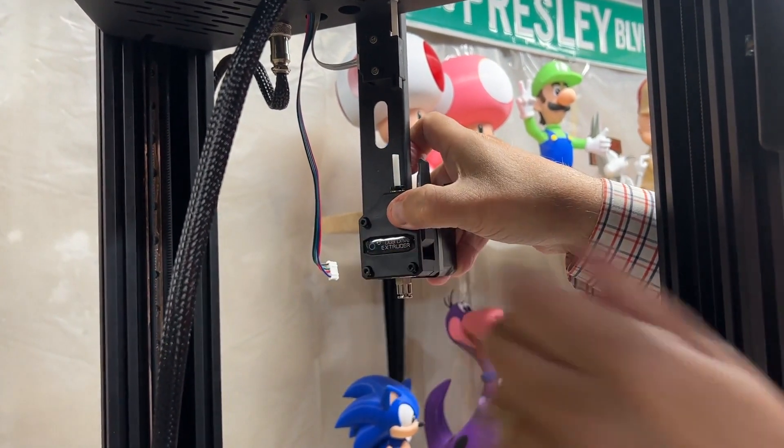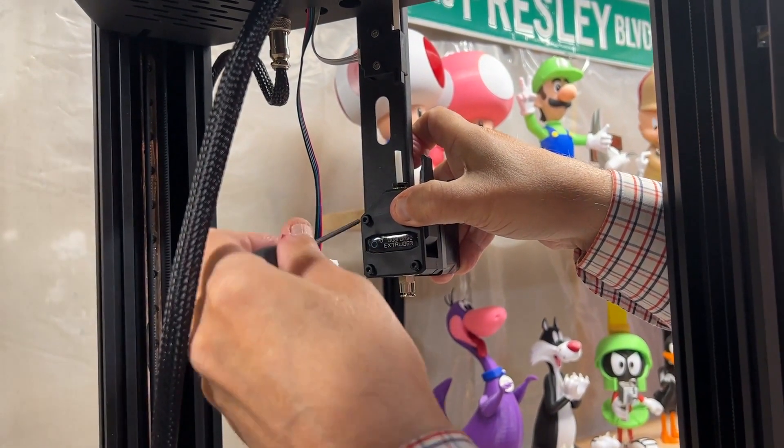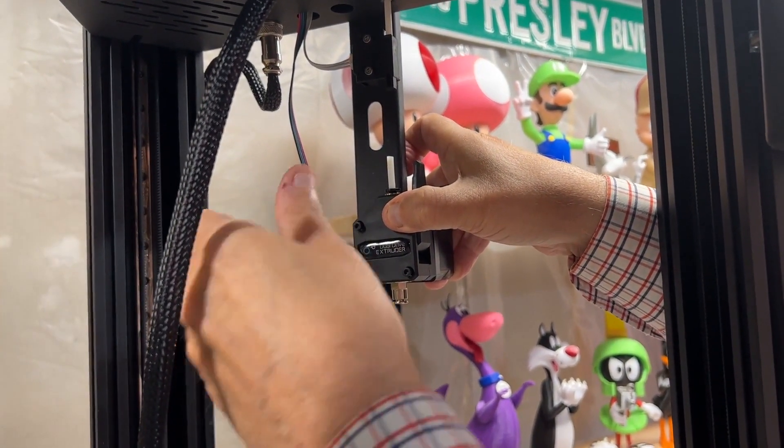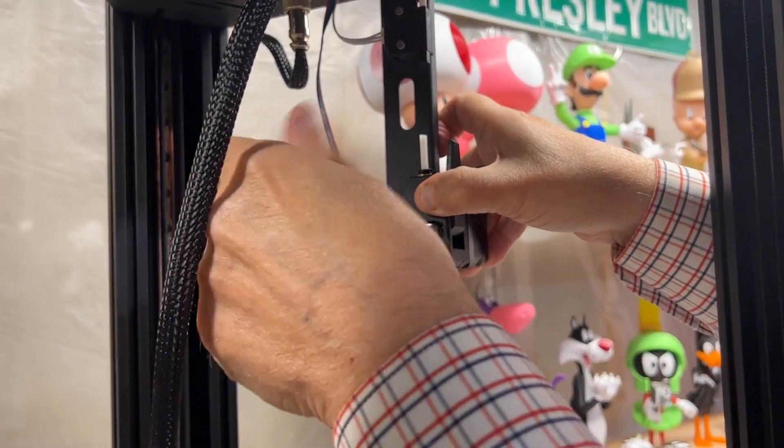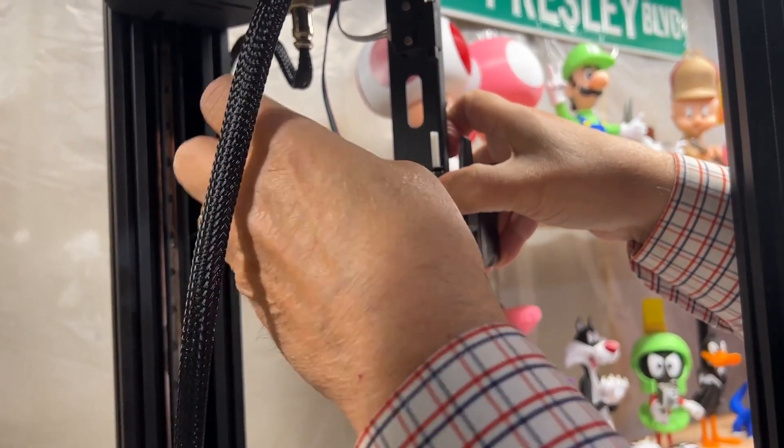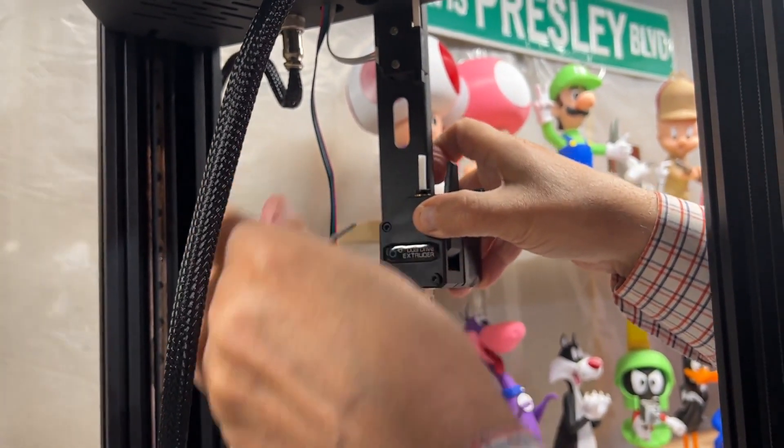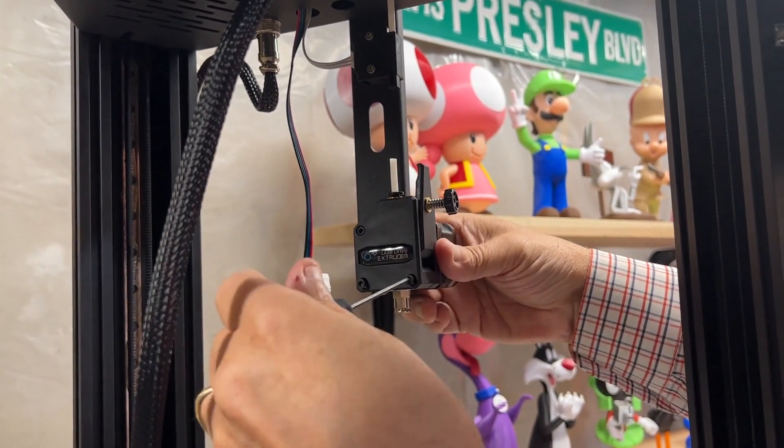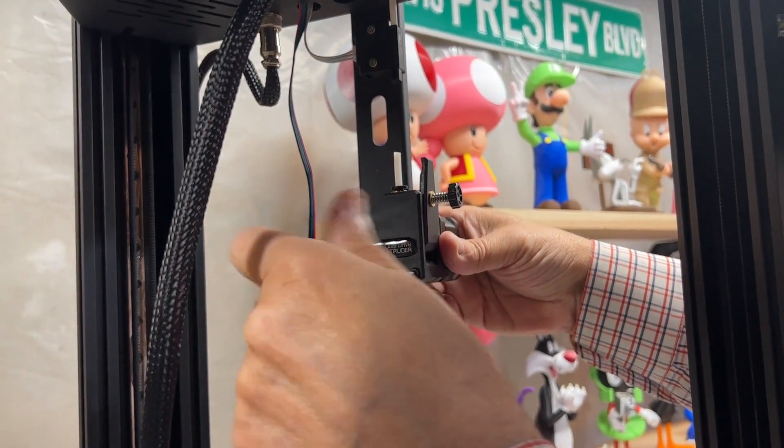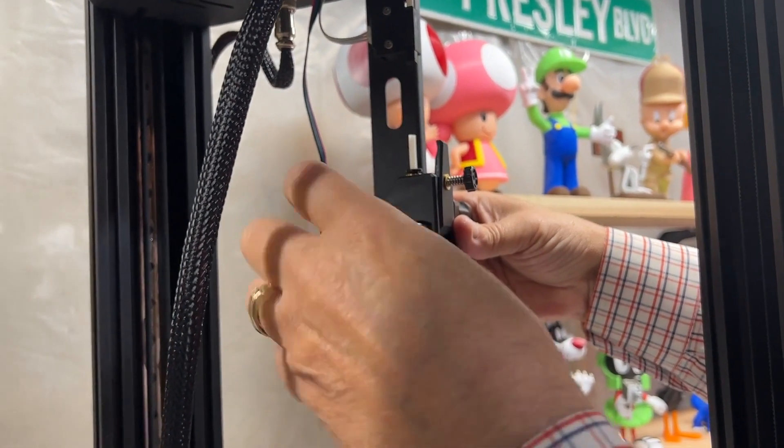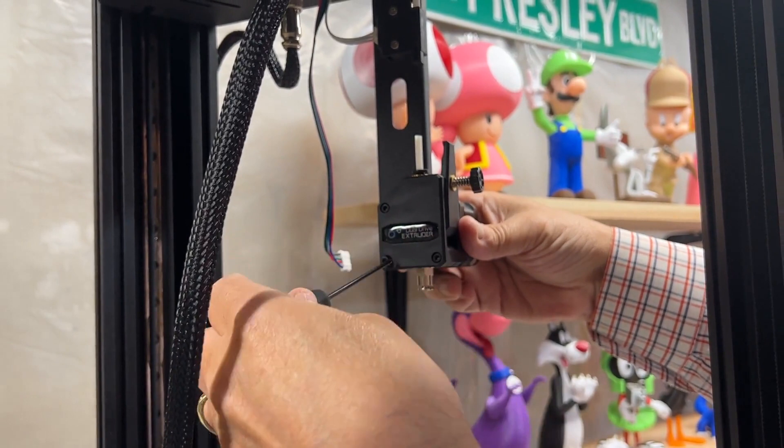So once you have it all in there, let's tighten up one of these screws here. Not tight tight, just a little tight, just to make sure everything's holding. Then you can go ahead and make sure these other screws are secured in place. Do the third one.